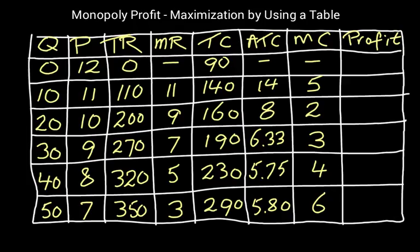First of all, notice that the demand curve for the monopolist is actually downward sloping. That means that as the price goes down from 12 to 11 to 10 and so forth, the quantity goes up. So this monopolist has control over the price.